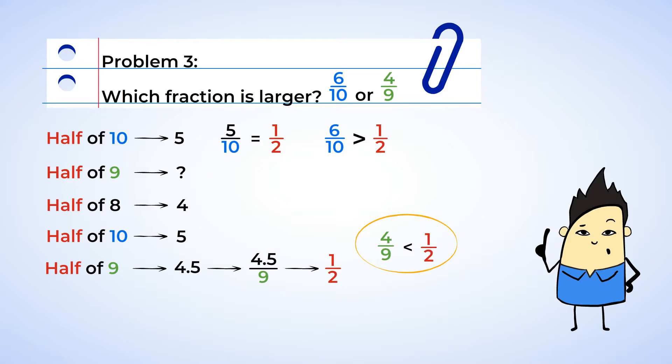Well, since six-tenths is greater than one-half, and four-ninths is less than one-half, we've figured out that six-tenths is greater than four-ninths. Pretty cool strategy, huh?